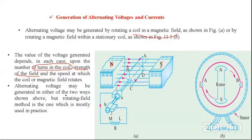Alternating voltage may be generated in either of two ways, but the rotating field method is the one which is mostly used in practice. In the first method, the magnetic field is constant and the conductors rotate, as in a DC generator.